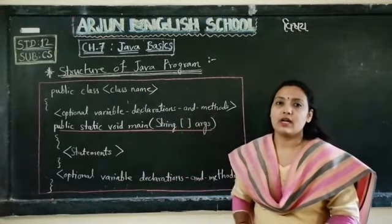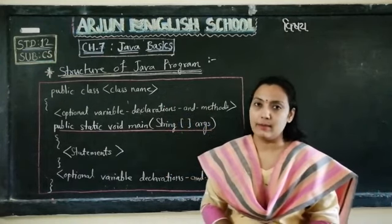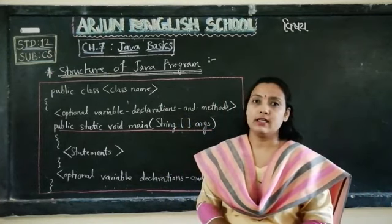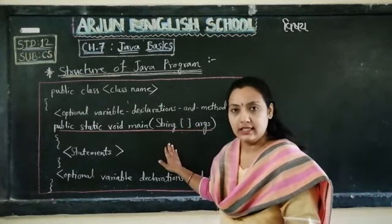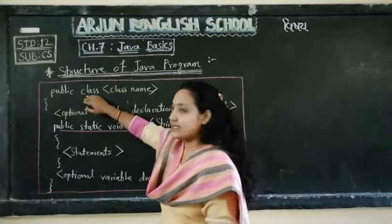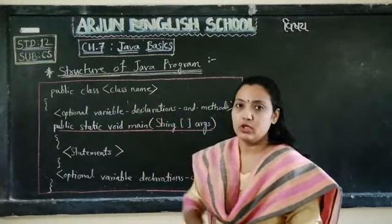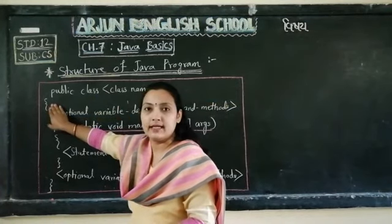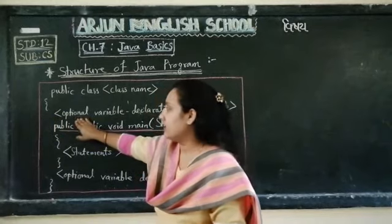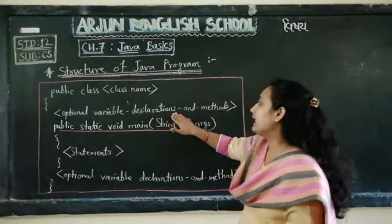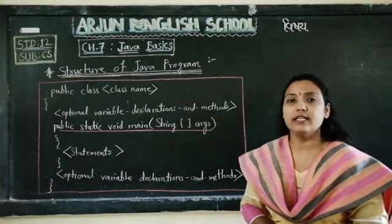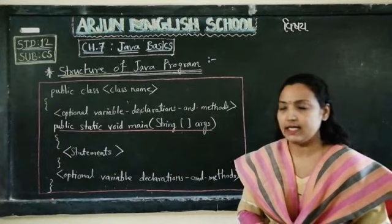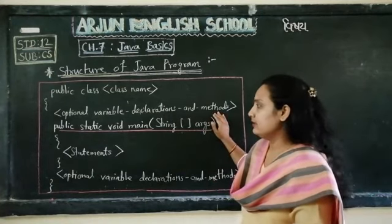As far as a Java program is concerned, certain points are compulsory to write down. The first compulsory part is: public class, and then the class name. After that, curly bracket open. After that, optional variable declarations and methods — certain variables and certain methods that we need to declare and write here.